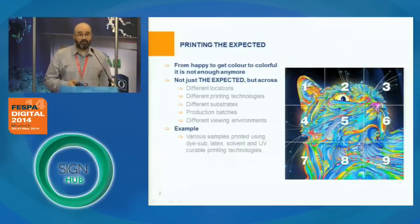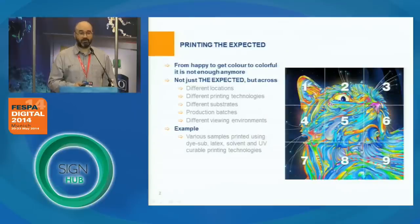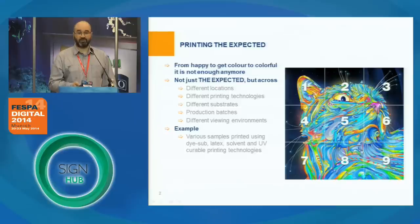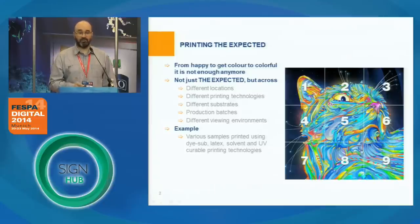The concept I'm going to present is called 'printing the expected.' It's something that Fogra launched several years ago, and it has expanded into digital printing to allow basically common appearance or production using different printing technologies, different substrates, different locations, different processing workflows, and also different viewing environments. The challenge is not just to print colorful content, but to have a meaningful reproduction that will fulfill the expectation criteria of the content creator.